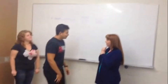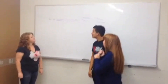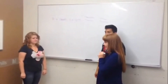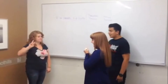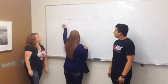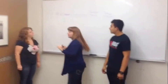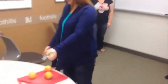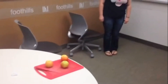So first of all we're going to see how many students we have. How many students are up front? Two. That is correct. Now we're going to see how many apples we have. How many apples are on the cutting board? Three.